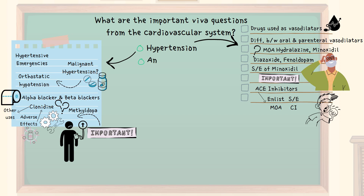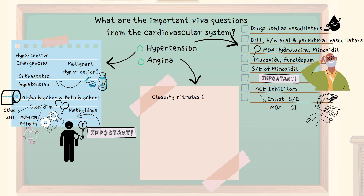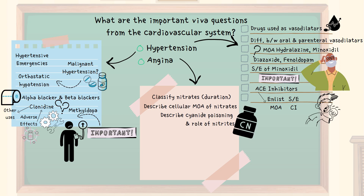Moving on to angina: classify nitrates according to their duration of action and describe the cellular mechanism of action of nitrates. Describe cyanide poisoning and the role of nitrites in the treatment of cyanide poisoning. Explain Monday's disease and the coronary steal phenomenon.